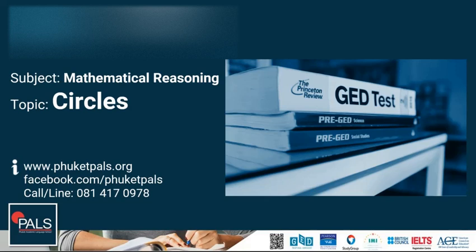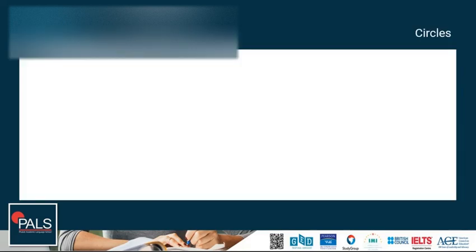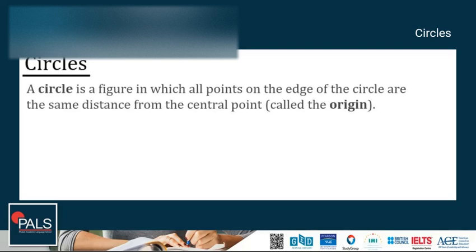To start, let us define circle. A circle is a figure in which all points on the edge of the circle are the same distance from the central point, and the central point is called the origin.